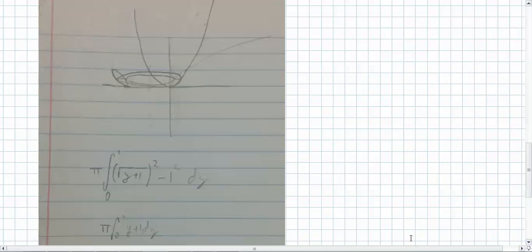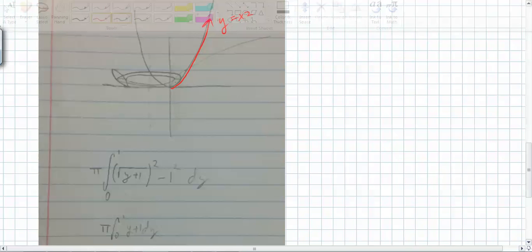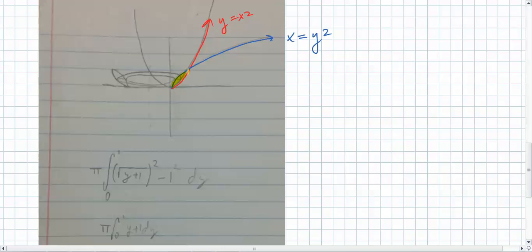So we have two functions here. We have this one right here, which is y equals x squared. And then we have the other function right here. Which one's that? x equals y squared. Good. So the enclosed area, excellent, is right there. There's our enclosed area. And you spun it around x equals negative 1.